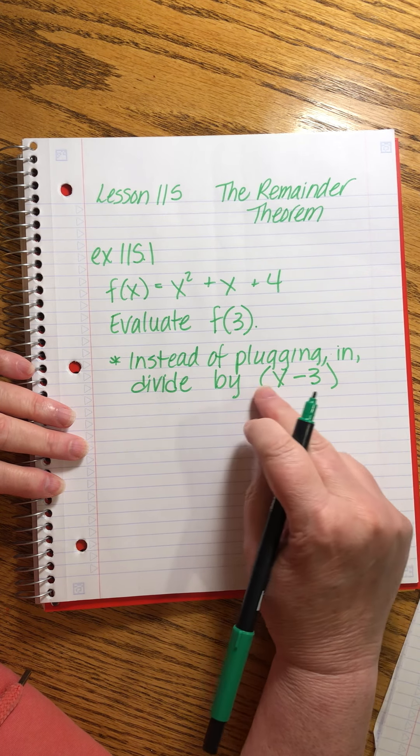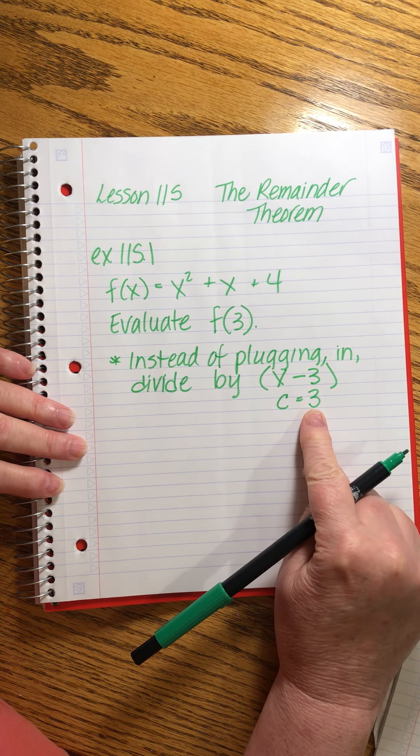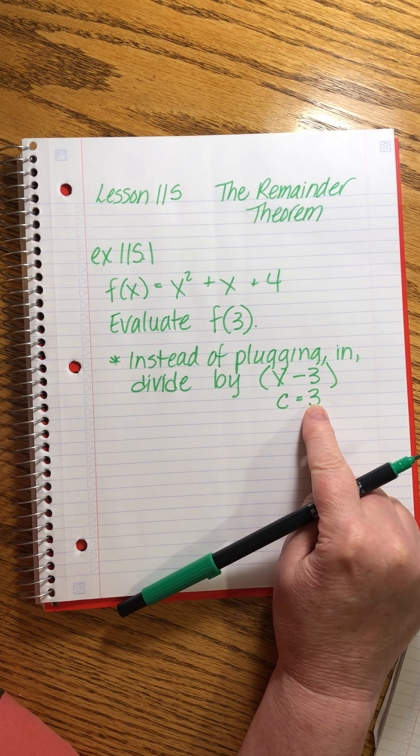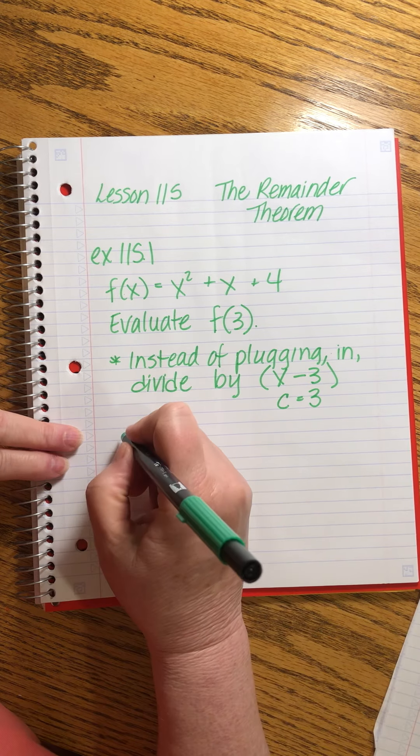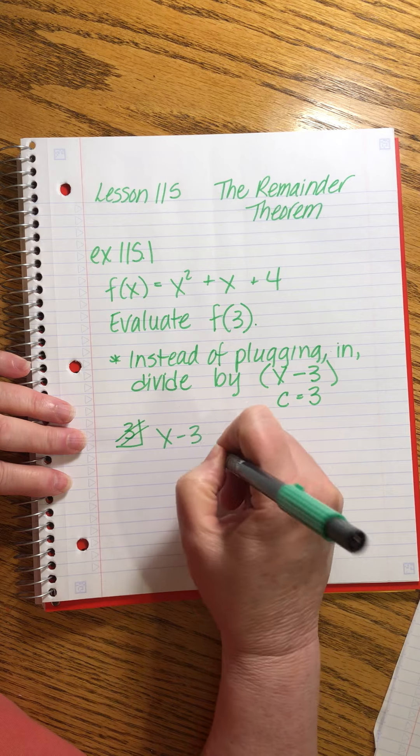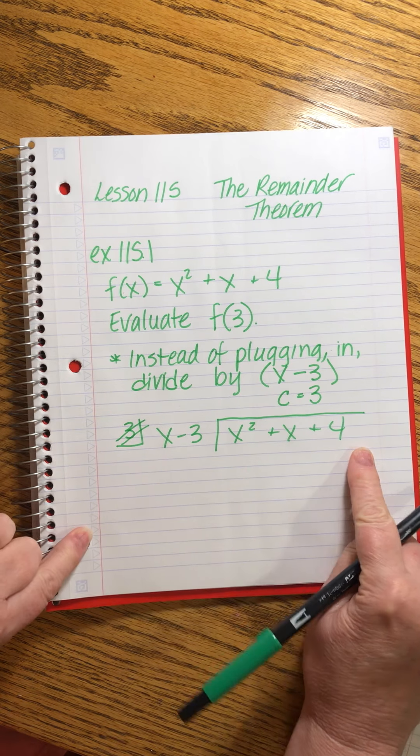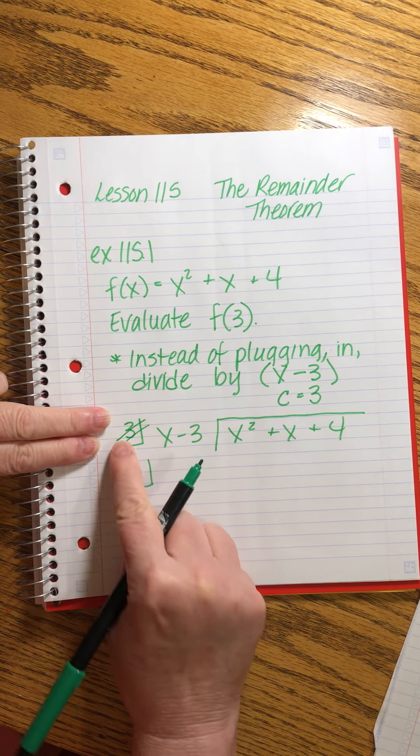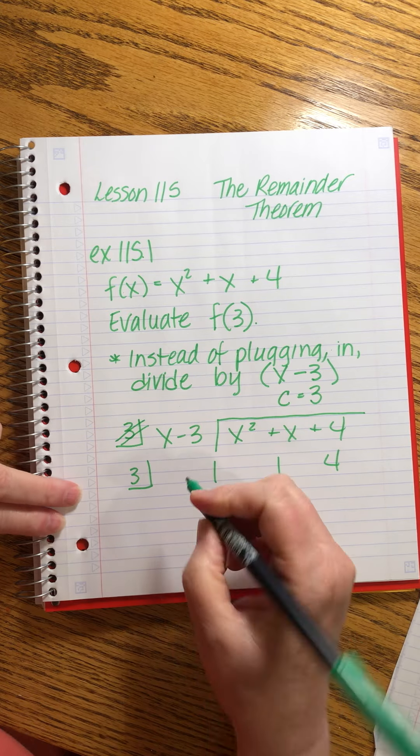Remember that when we are dividing by something like this, we say that 3 is actually the value we're dividing by. We take the opposite sign. Sometimes we call this a. Today we're going to call this number that we're dividing by as 3. So we use synthetic division. We're going to put the number that we're dividing by in the little box, and then let me write the whole thing. It's going to be x divided by x minus 3 divided into x² + x + 4. But we'll use the synthetic format, which is now when I use my little box of 3, and then we're going to write the coefficients, 1, 1, and 4.